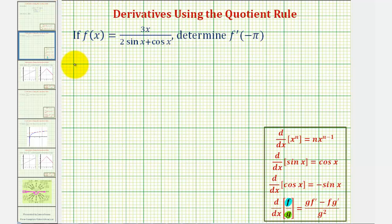Which means in our case, f prime of x will be equal to a quotient, where notice how the denominator is just the denominator squared, so we would have the quantity two sine x plus cosine x squared. And now our numerator is going to be g times f prime minus f times g prime.